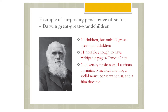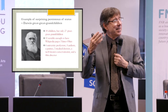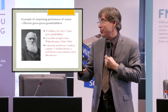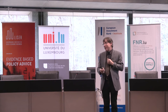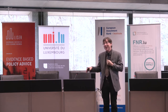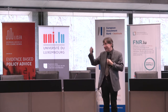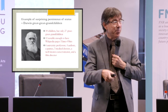Once you see this persistence of status in surnames, it turns out it's reflecting something much deeper about social reality. We can illustrate this with the great scientist Darwin. Because Darwin is so famous, we know all of his great-great-grandchildren — he has just 27, even though he had 10 children. Eleven of Darwin's great-great-grandchildren are notable enough to have Wikipedia pages. They do everything: they're authors, university professors, doctors, painters. Darwin's great-great-grandchildren are more distinguished than myself and my colleagues, just from the accident of being descended from this man in the 19th century. This illustrates a surprising persistence of social status that is not being captured by regular measures of social mobility.